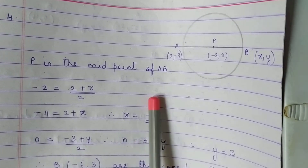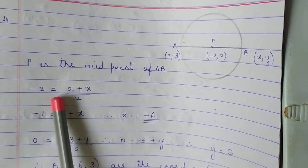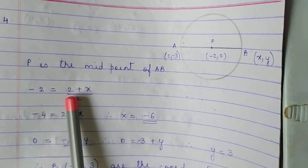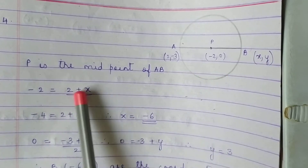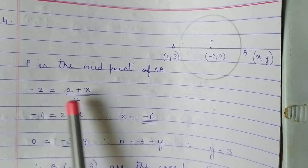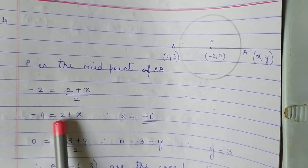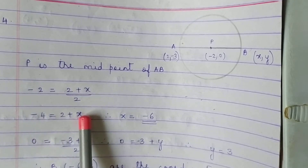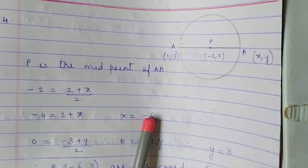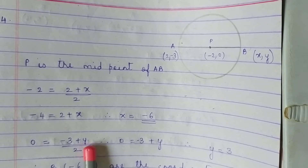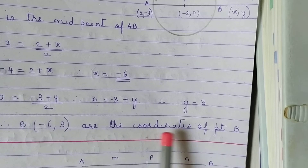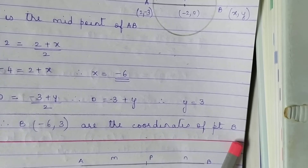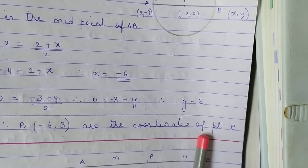P is the midpoint of AB. Therefore minus 2 equals (X1 plus X2) by 2, where X1 is 2 and X2 is unknown X. So (2 plus x) upon 2; cross multiply: minus 2 into 2 is minus 4 equals 2 plus x. Therefore x equals minus 4 minus 2, which is minus 6. Same method for the Y coordinate gives Y equals 3. Therefore the coordinates of point B are (-6, 3).